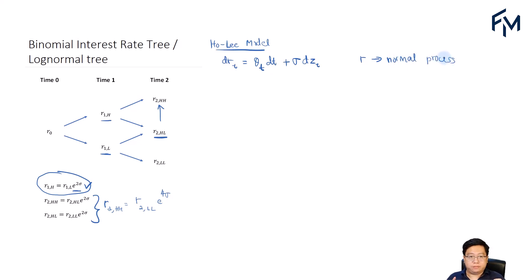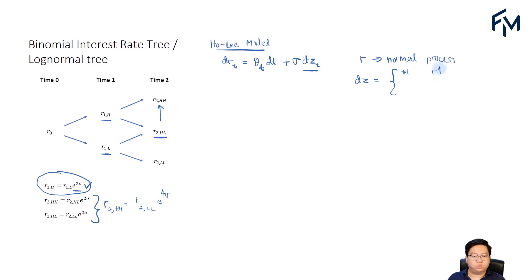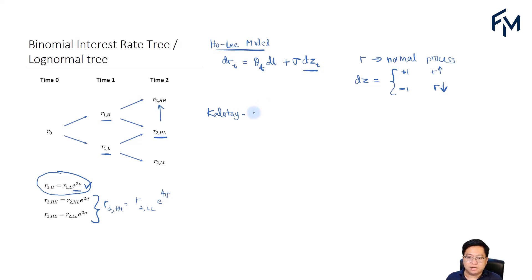Before moving to the actual model, note that for the term dz, we assume it takes a value of positive 1 if interest rates go up, and negative 1 if interest rates decrease. The model we are going to use is the Charlette-Williams-Fabozzi model, or KWF model. This is not in the CFA program syllabus, but we need it to establish this relationship.